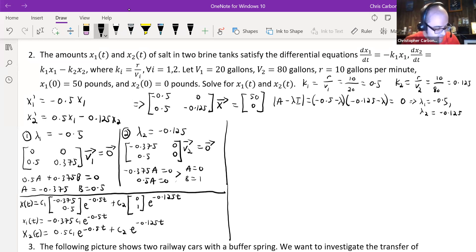So then from this, we would use our initial conditions here. x₁(0) would just give us negative 0.375 times c₁, which then gives us that c₁ has to be, as a fraction, negative 400 over 3.